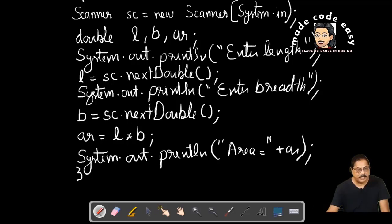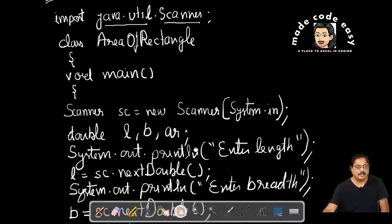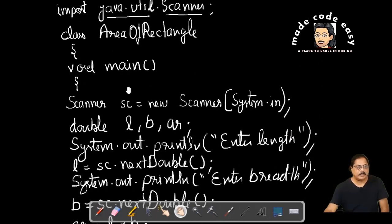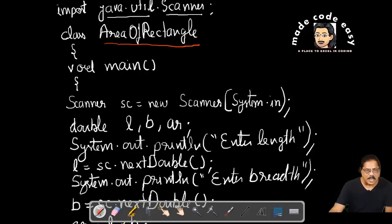Curly bracket close of main, curly bracket close of class. So this is a complete program of calculating area. When you make a program, you first write the class name. You can give any name to class. What is suggested? That whenever you give the name, you must write each character of a word in capital letter. That's Pascal case. You see area, A is capital, O is capital, and rectangle, R is capital. And there is no space allowed while giving the class name.